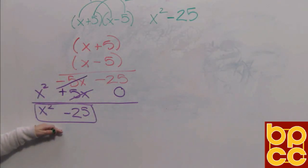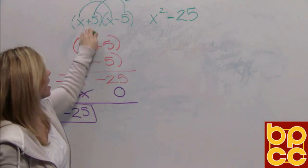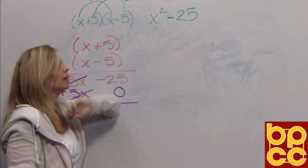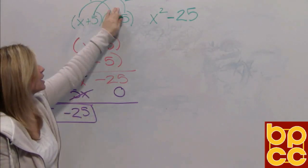Isn't that the same result we got here working it out? Sure it is. So what's going to happen is every time we multiply conjugates, we do not need to do the work. We can do it in our head by just multiplying the first and the last.